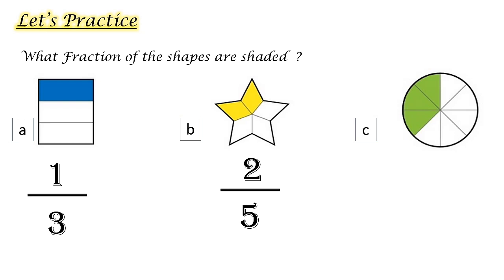C. How many parts are shaded with green color? Three slash, the total number. Count: one, two, three, four, five, six, seven, eight.